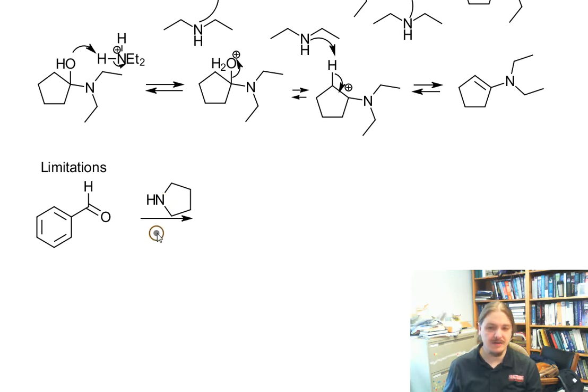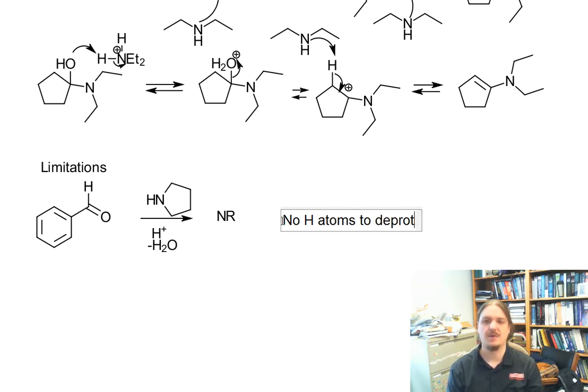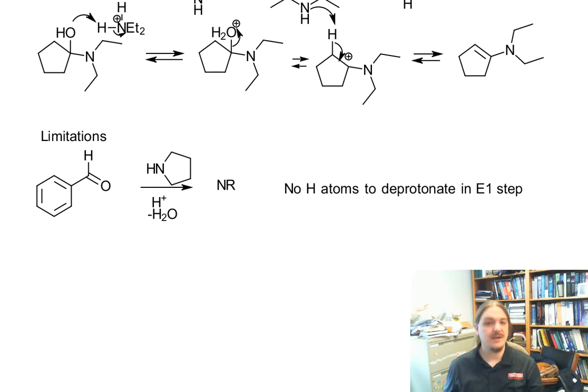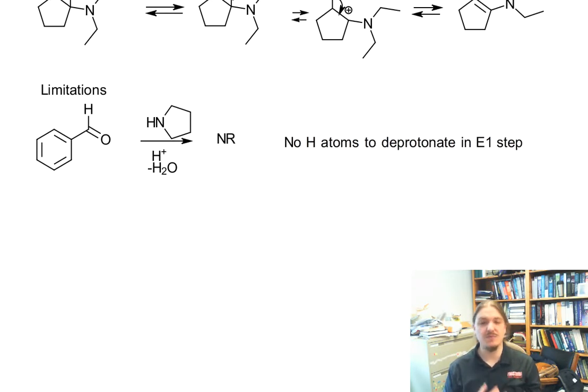If you tried to react benzaldehyde with any secondary amine—doesn't have to be this cyclic secondary amine—you're going to get no reaction out of this combination. There are no hydrogen atoms to remove in the E1 step.